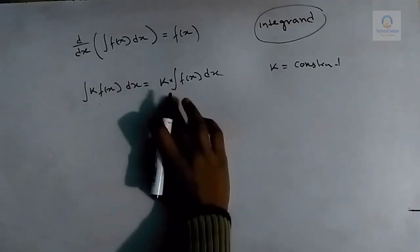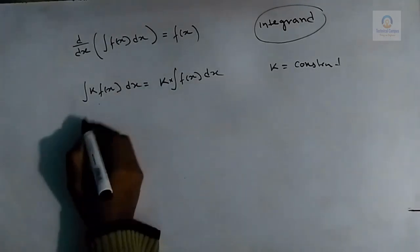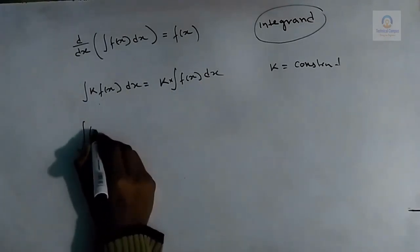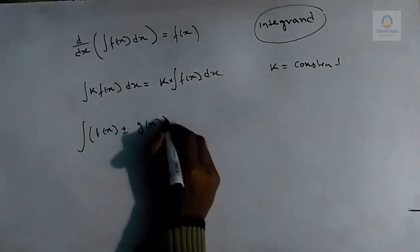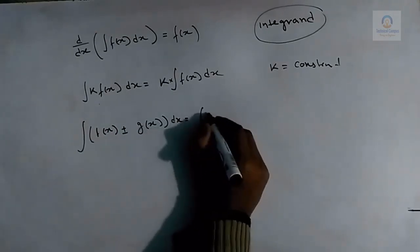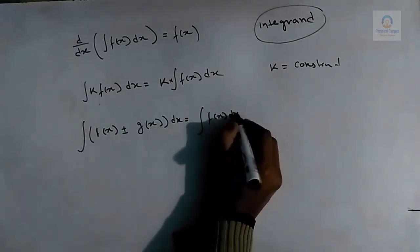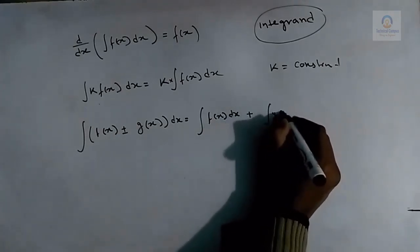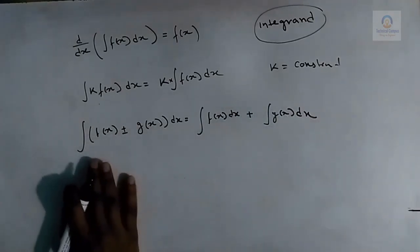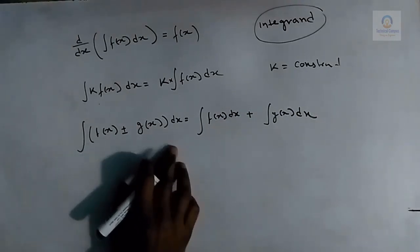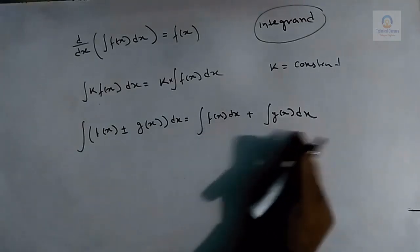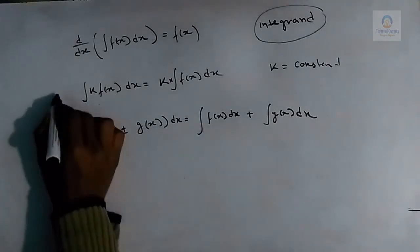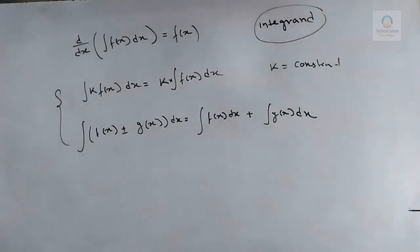The third property: the integral of f(x) ± g(x) dx equals the integral of f(x) dx plus or minus the integral of g(x) dx. This means the integral of the sum or difference of a finite number of functions is equal to the sum or difference of the integrals of the various functions. We used this same property in differentiation as well.